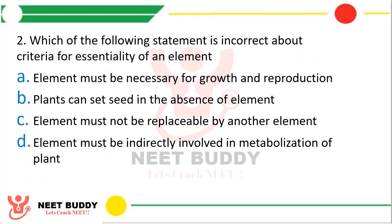Question 2: Which of the following statements is incorrect about criteria of essentiality of an element? The correct answer is statement D is incorrect — element must be directly involved in metabolism of plant, not indirectly. It should have a direct role in metabolism of the plant.